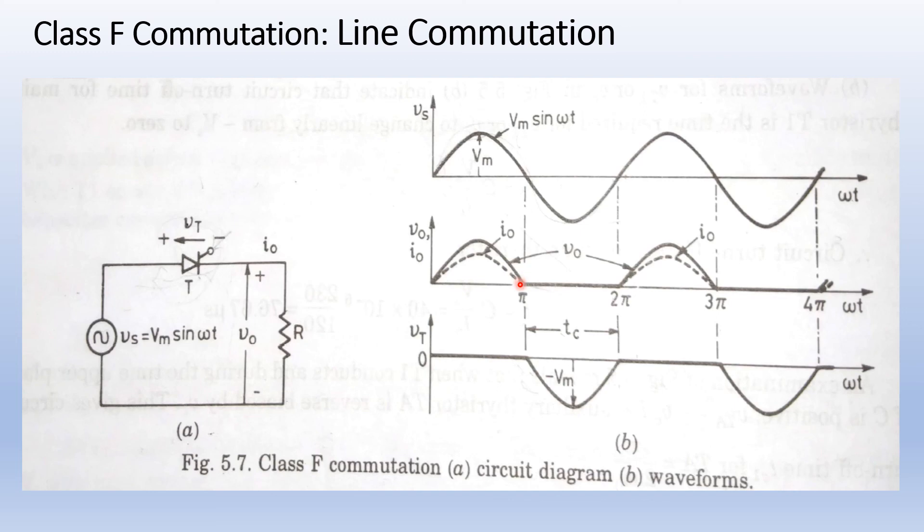At omega t equal to pi, Vs equal to zero and V0 equal to zero and I0 equal to zero. Therefore, thyristor T gets turned off at this instant.